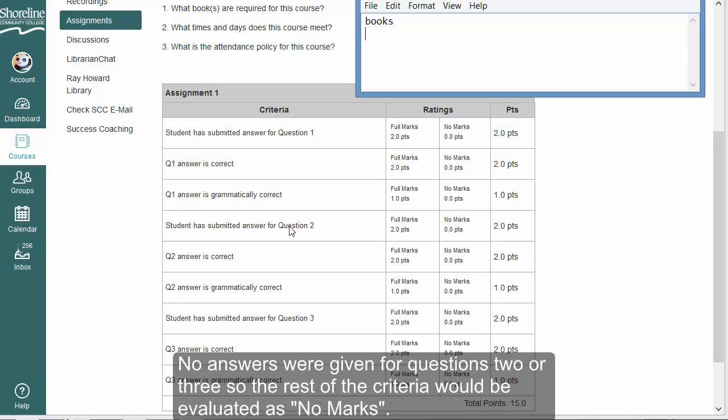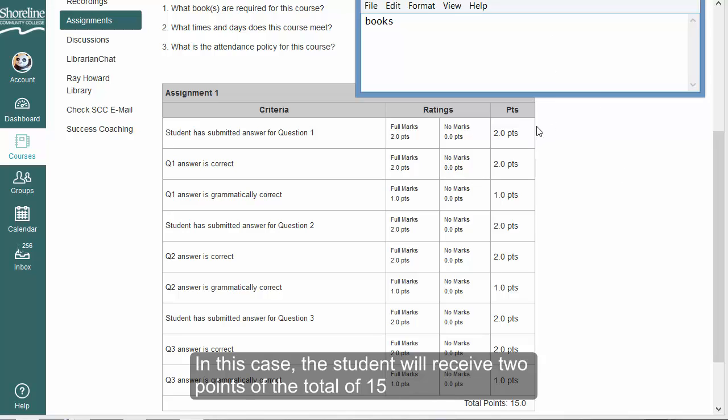No answers were given for questions two or three, so the rest of the criterion would be evaluated as no marks. In this case, the student would receive two points out of the total of 15.